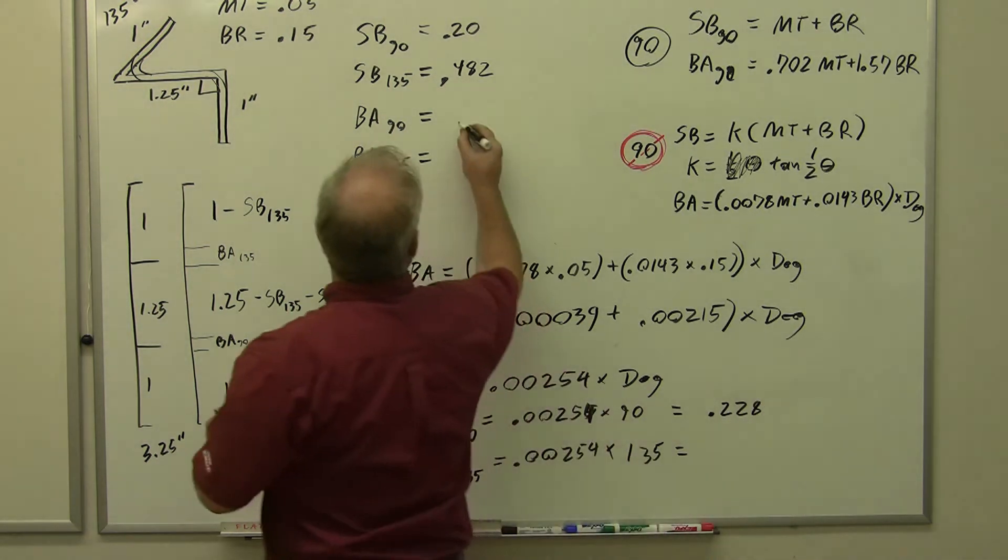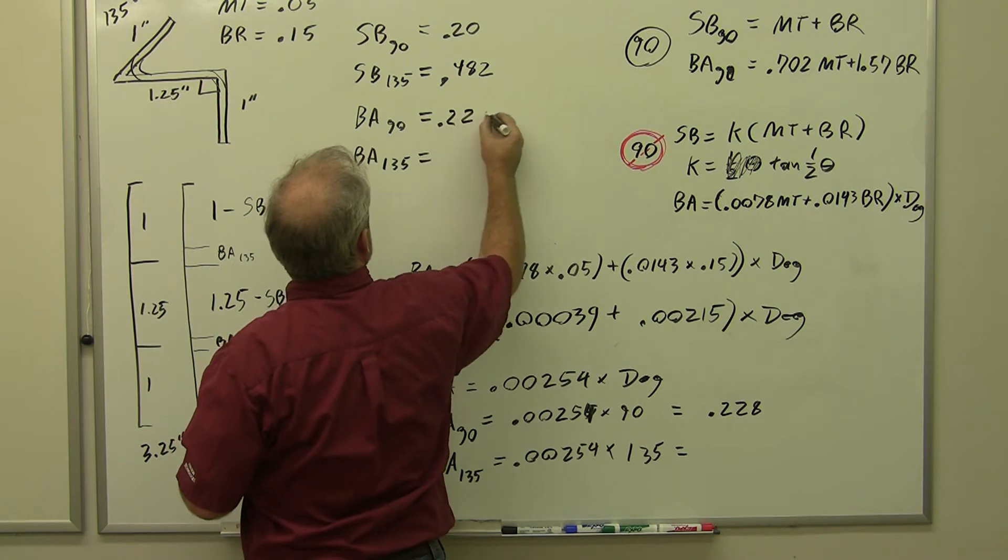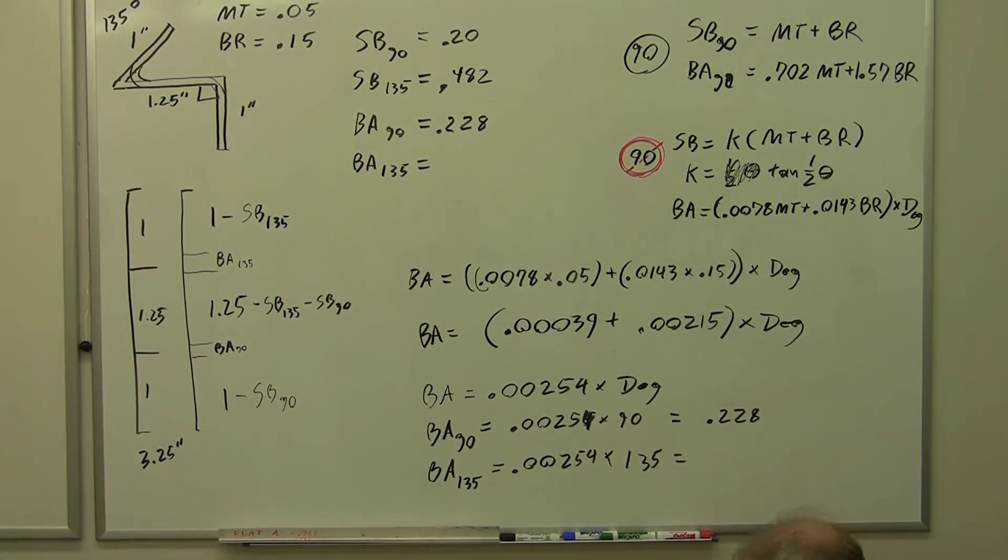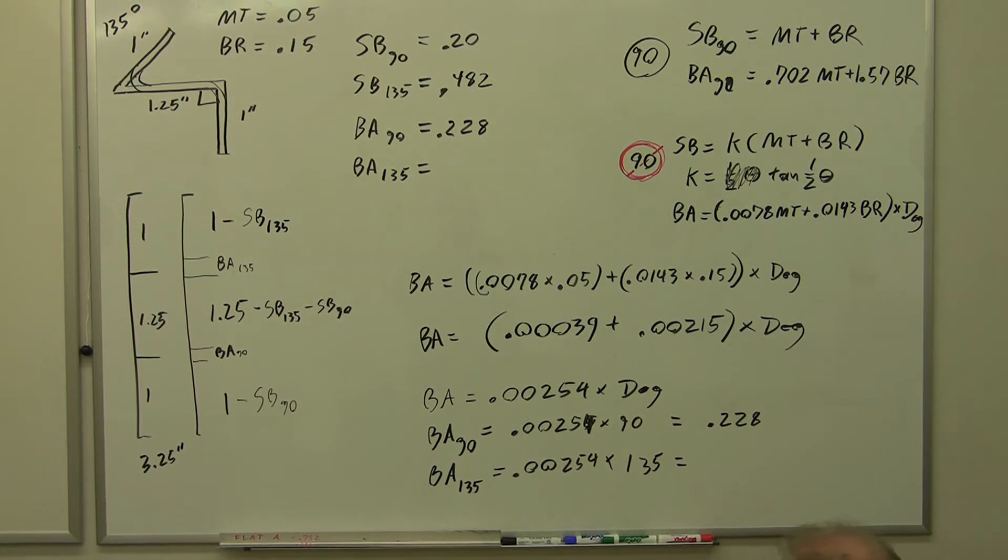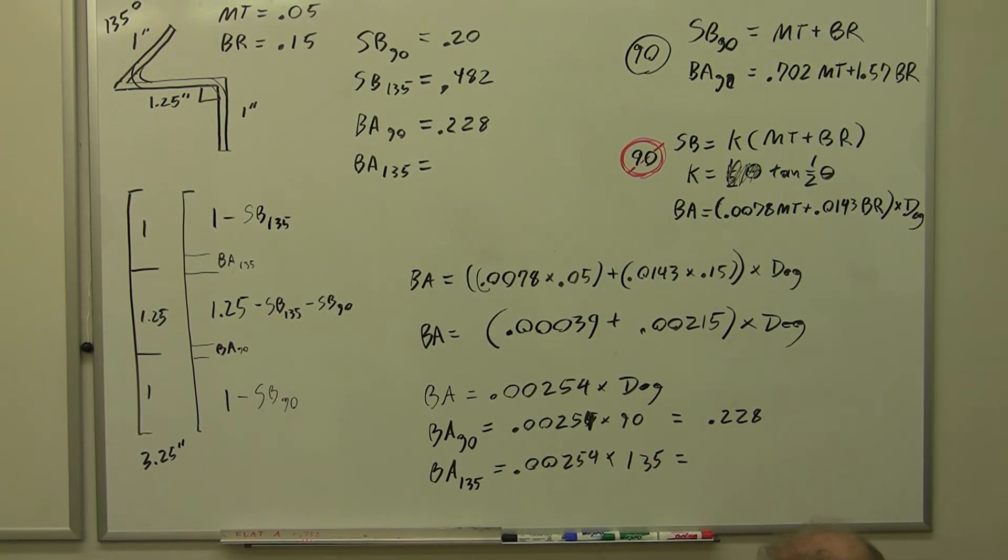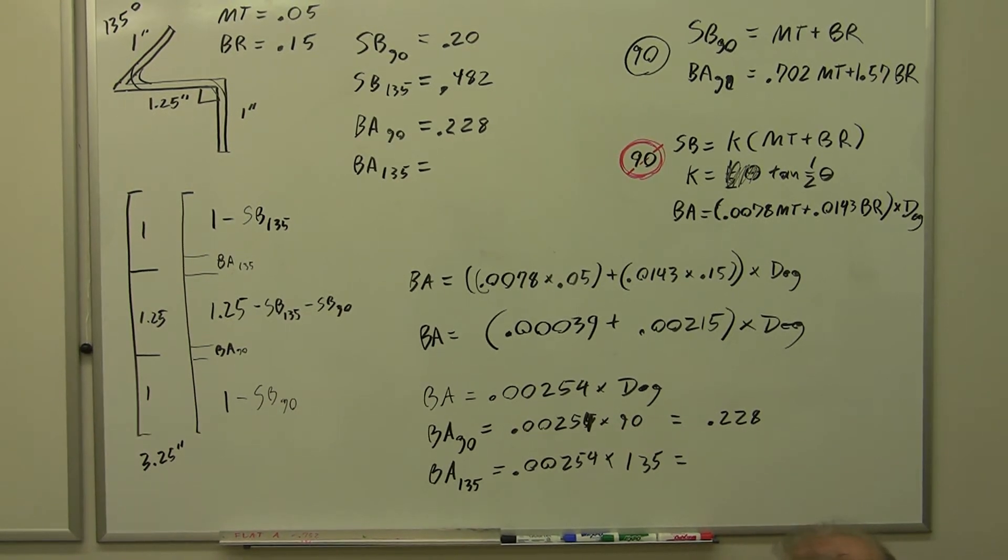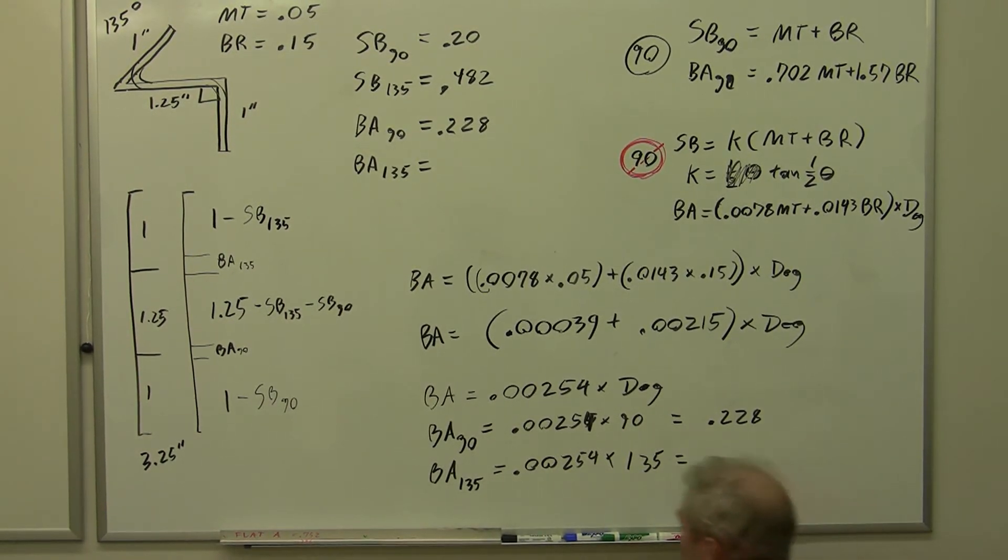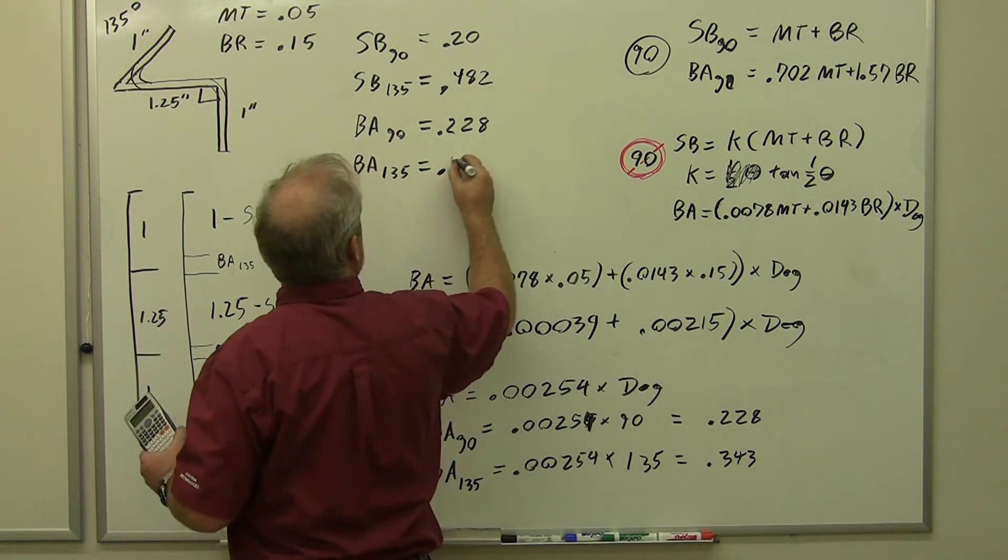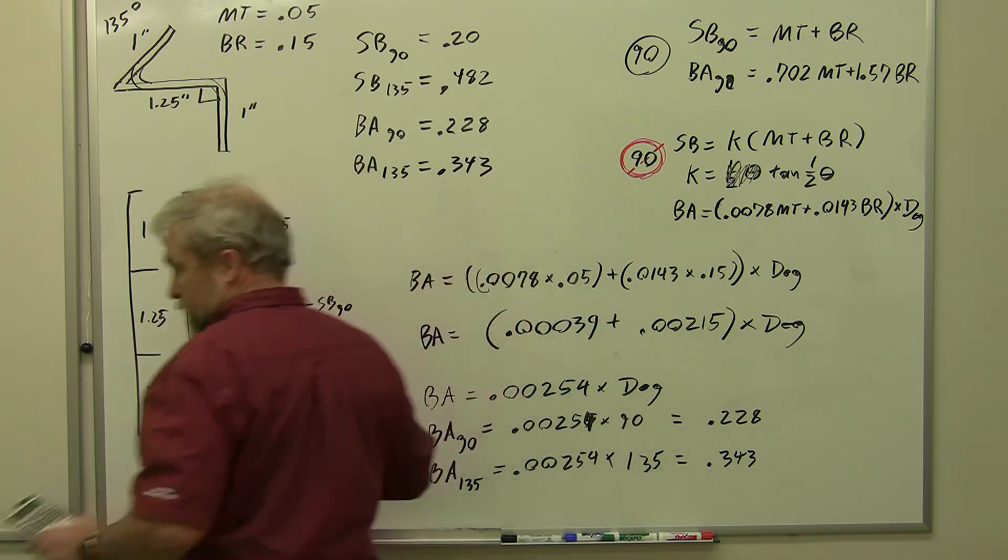I'm going to go ahead and put that up here. My bend allowance 90 is 0.228, and my bend allowance 135 is 0.00254 times 135 for a total of 0.343.